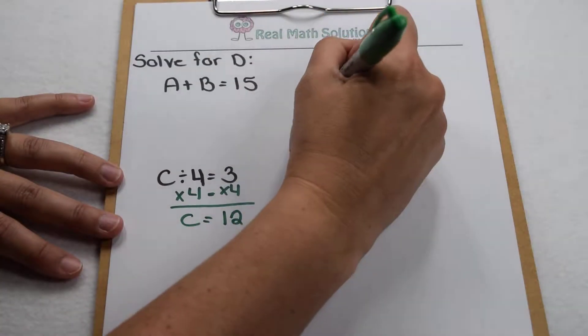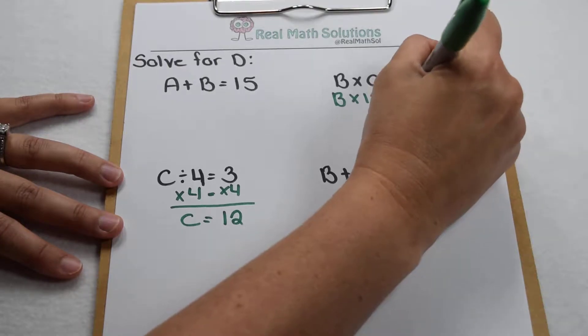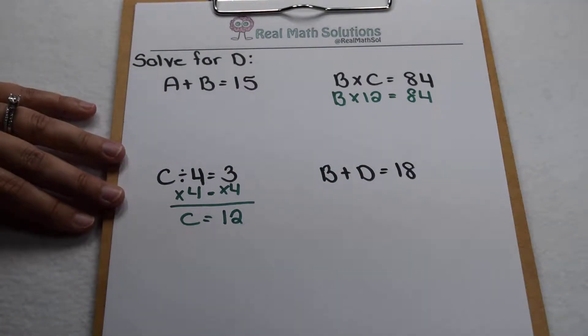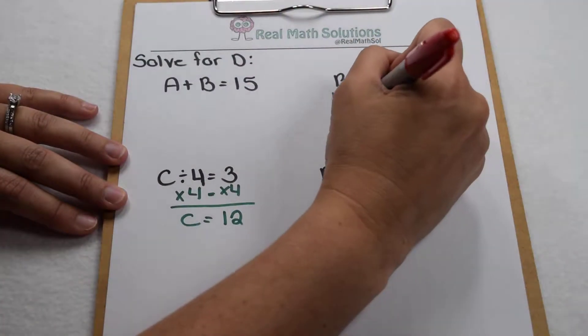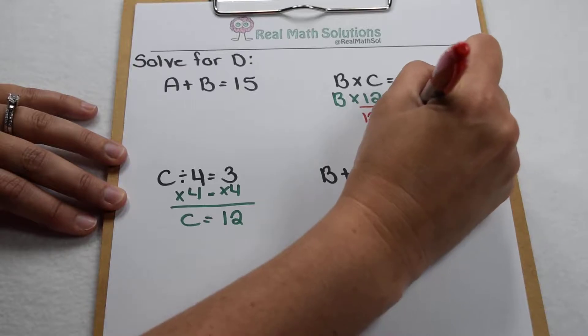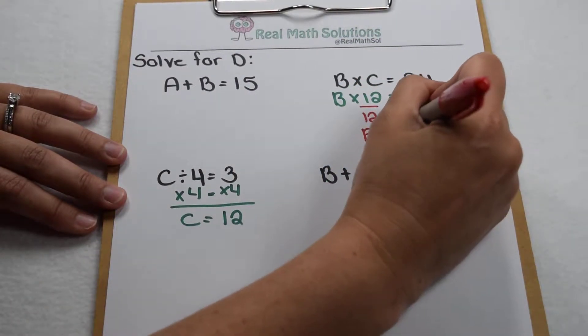So I'm going to take that and now I know that b times 12 is going to give me 84. Well I can use that now to find what my value of b is. Undo my multiplication with division and I'm going to divide both sides by 12. When I divide both sides by 12, that tells me that b is going to be equal to 7.